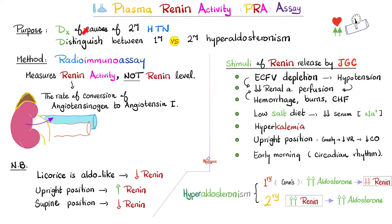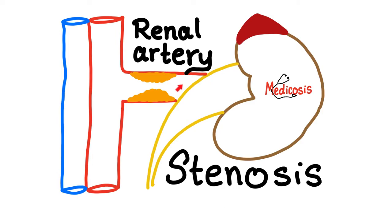Let's review. The plasma renin activity assay is used to diagnose causes of secondary hypertension and to differentiate between primary hyperaldosteronism, where the problem starts in the adrenal cortex, versus secondary hyperaldosteronism, where the problem started somewhere else. The renal vein renin assay is for renal artery stenosis — stenosis meaning narrowing of the renal artery. Today's topic, the captopril stimulation test, also helps establish that the cause of hypertension is the narrow renal artery.